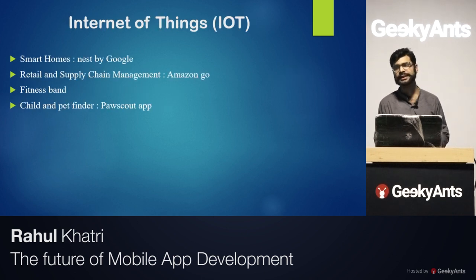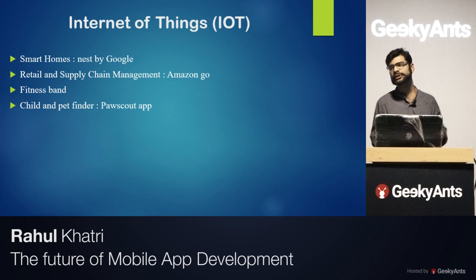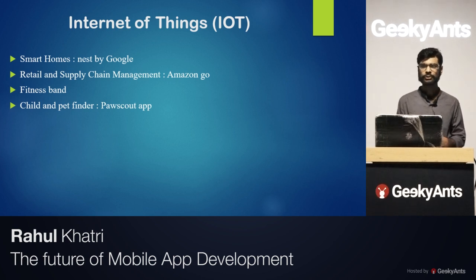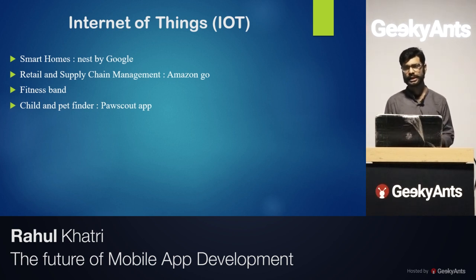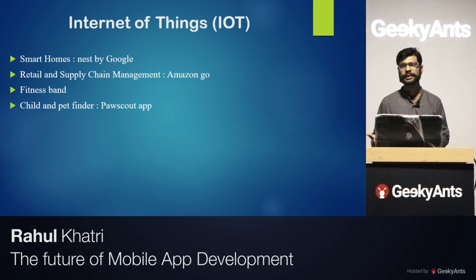Next is IoT. How is it related to mobiles? IoT is related to smart homes and smart things. One early example is the Philips HUE app — one of those IoT apps. With that app, you were able to control LED lights, adjusting brightness levels and colors from your mobile.